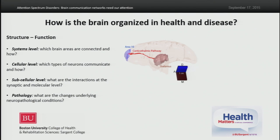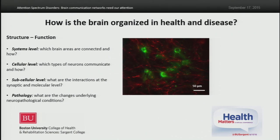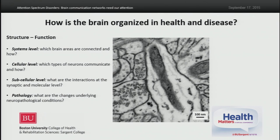At the cellular level, we're trying to figure out which types of neurons communicate and how. Here you can see neurons labeled with green and their pathways that communicate with these neurons labeled with red. We can zoom in further and look at these interactions at the subcellular level, examining synaptic and molecular scale interactions. At all levels, we're trying to identify changes underlying pathological conditions.